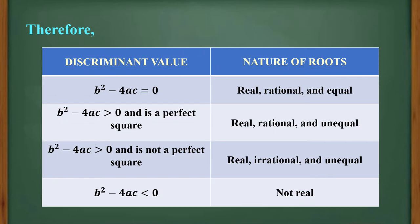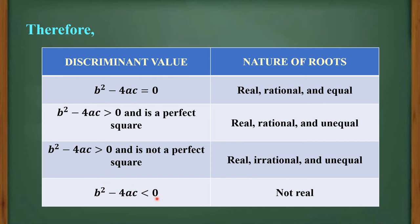This is the summary of the topic. When b squared minus 4ac equals 0, the nature of roots is real, rational, and equal. When b squared minus 4ac is greater than 0 and is a perfect square, the roots are real, rational, and unequal. When the discriminant is greater than 0 but not a perfect square, the roots are real, irrational, and unequal. And if b squared minus 4ac is less than 0 — meaning negative, like negative 144 — then the nature of roots is not real.